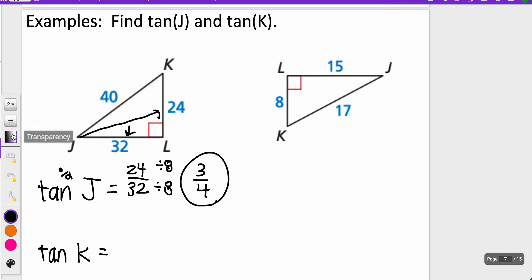Then I find the tangent of K. K is opposite over adjacent, so that'd be opposite is 32, adjacent next to K is 24. This one will just reduce to 4 thirds or 4 to 3.